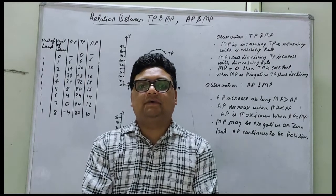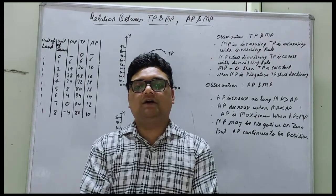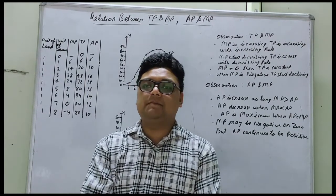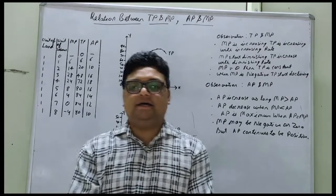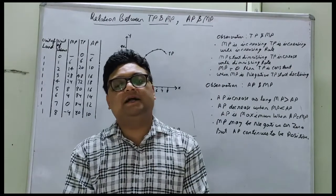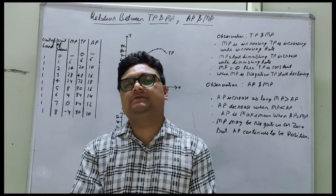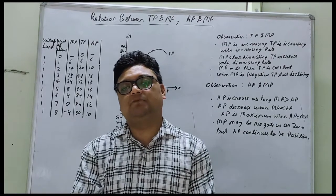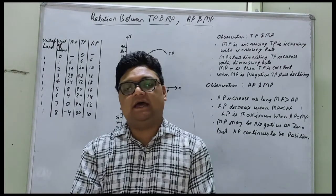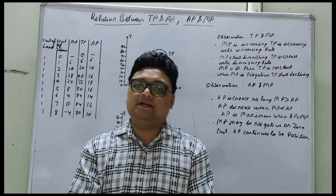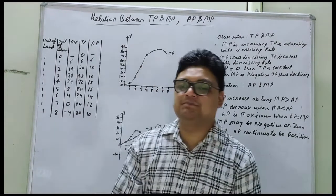Hello everyone, welcome back. So students, now we are going to sum up our chapter with this topic, as this will be the last topic of our chapter. The topic is: relationship between total product and marginal product, and marginal product with average product. So let's start.